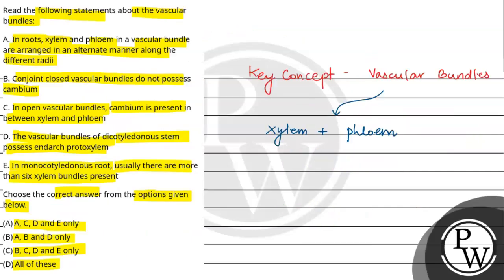Coming back to the question: the first statement says in roots, xylem and phloem are arranged in an alternate manner along different radii — this is the radial arrangement of roots, so this statement is correct. Second: conjoint vascular bundles do not possess cambium — that refers to closed vascular bundles, so cambium is not present there. Third: in open vascular bundles, cambium is present between xylem and phloem — this is also correct.